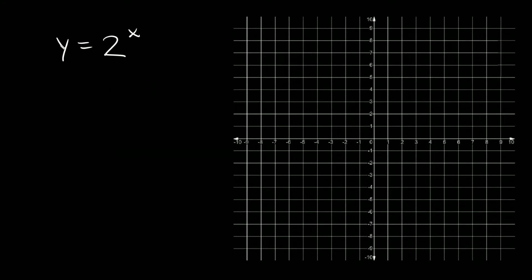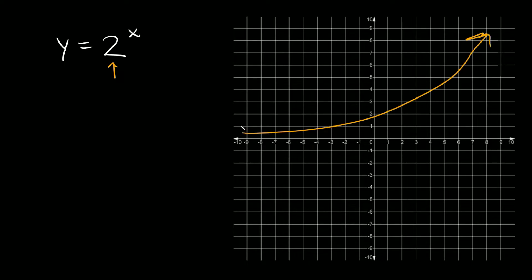Here's the first example: y = 2 raised to the x. Is this exponential growth or decay? Well, our b value is 2, which is bigger than 1, so this is an exponential growth function. We know it's going to look something like that — curving upward.